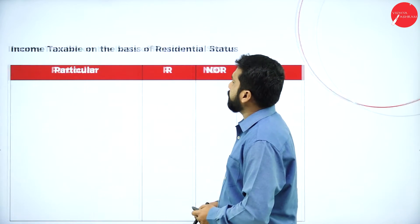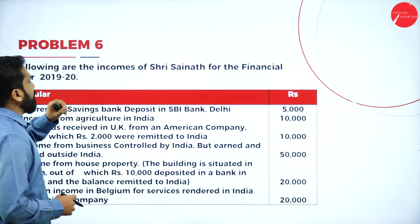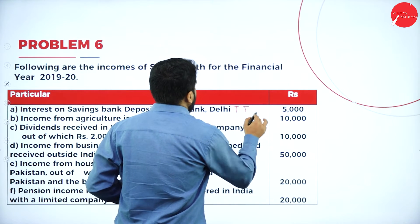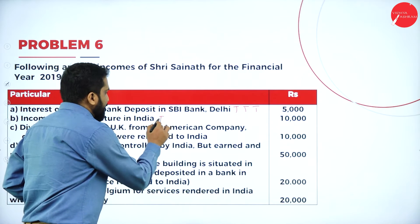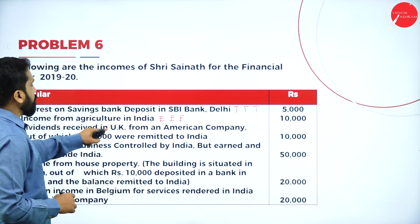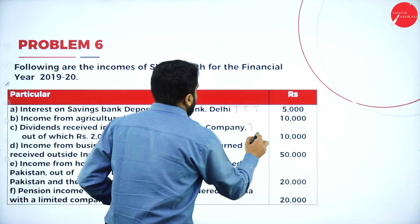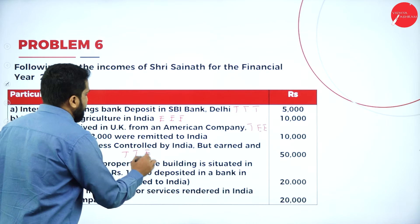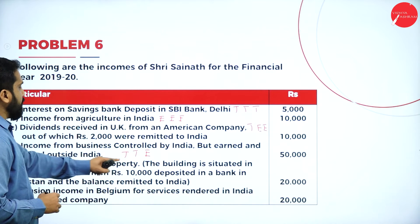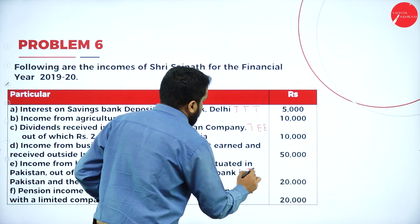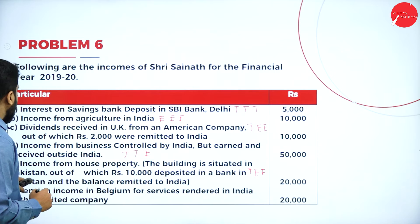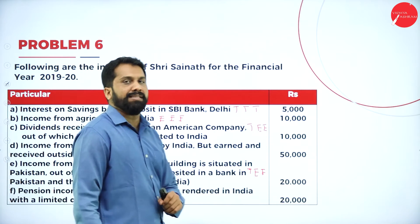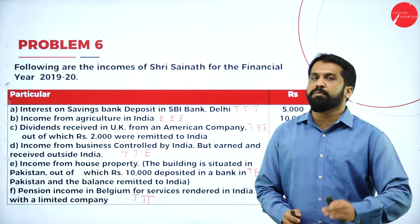This is all about problem number one. We move for problem number two. From the following information, find out the income. Interest on saving bank: taxable, taxable, taxable. Income from agriculture: exempt, exempt, exempt. Dividend received from UK: one person taxable, exempt, exempt. Income from business controlled by India: taxable, taxable, exempt. Income from house property — building situated in Pakistan: one person taxable, exempt, exempt. Pension income in Belgium for service rendered in India: taxable, taxable, taxable.